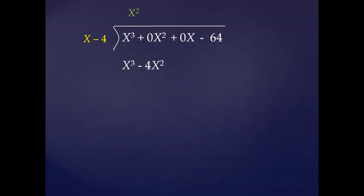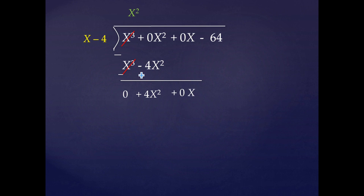Then we subtract this from the first two terms of the dividend. While subtracting, we change the sign of each term in the second algebraic expression: +x³ becomes -x³ and -4x² becomes +4x². So +x³ and -x³ cancel, and 0x² + 4x² gives 4x². To proceed, we bring down the next term 0x, giving the expression 4x² + 0x.